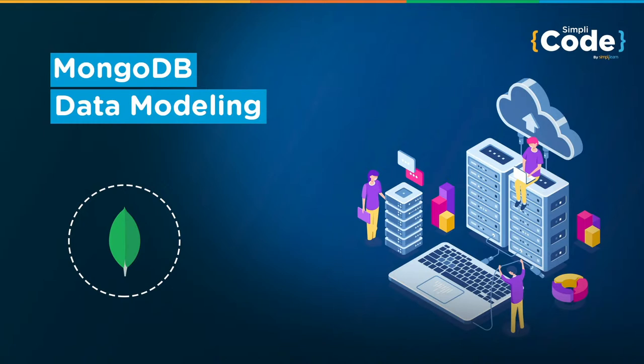In contrast to SQL databases, which follow a relational database model where the structure of the database and its tables have been defined, MongoDB does not have or require the definition of a database or table structure. Instead, we use data models in order to store documents in our database.